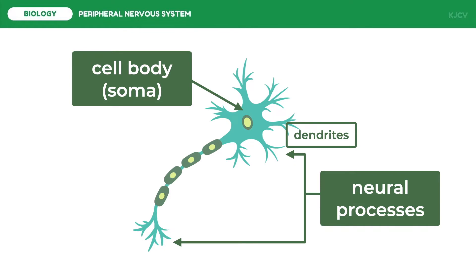In most neurons, the plasma membrane of the dendrites and cell body contains protein receptors that bind chemical messengers from other neurons. Therefore, the dendrites and cell body are the neuron's input zone because these components receive and integrate incoming signals.